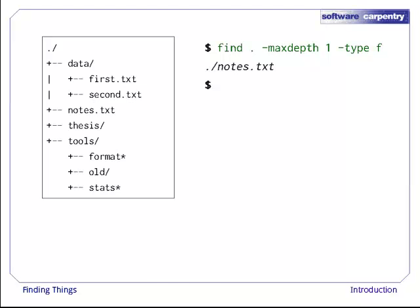If we don't want to go that deep, we can use -maxdepth to restrict the depth of search. Here, -maxdepth 1 tells find to only look at this level, so the only file it finds is ./notes.txt.